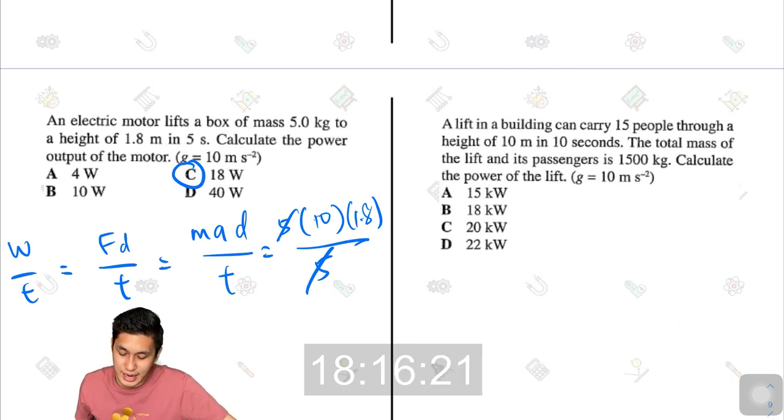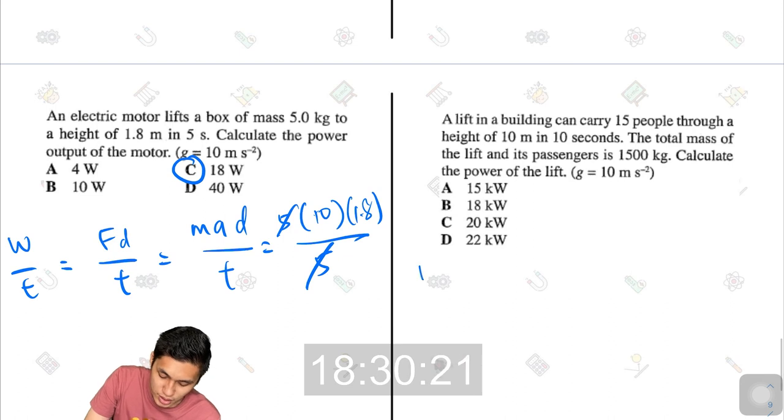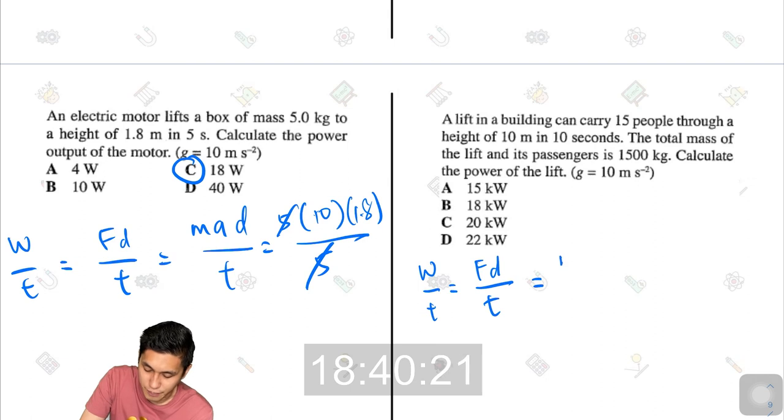A lift in a building can carry 15 people through a height of 10 meters in 10 seconds. The total mass of the lift and its passengers is 1,500 kg. Calculate the power of the lift. Same question. We can do again. Work over time equals power. And work equals force times distance. So work over time is force times distance divided by time. And force is mass times acceleration.